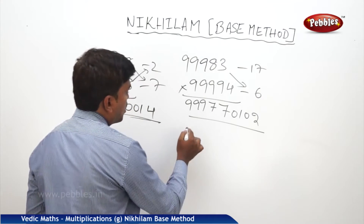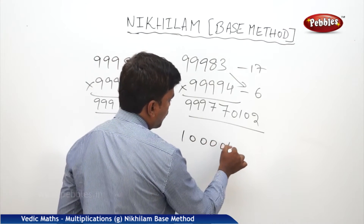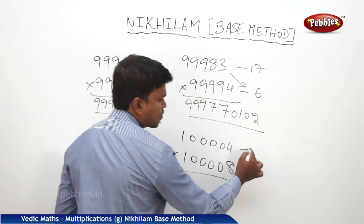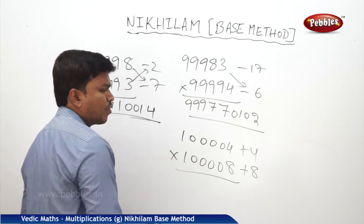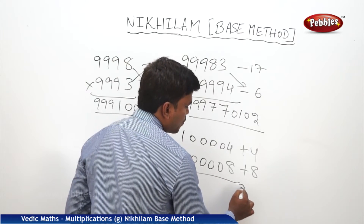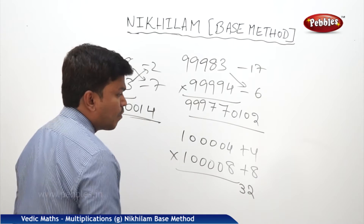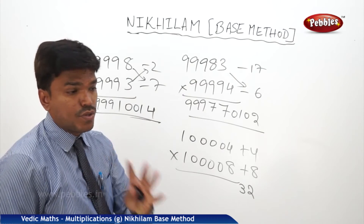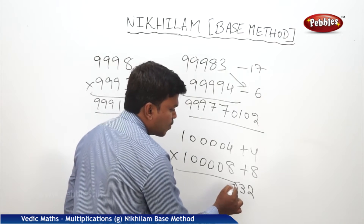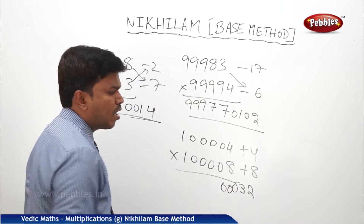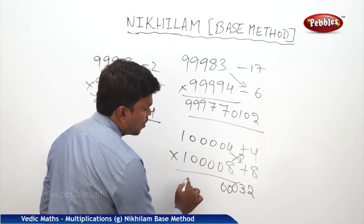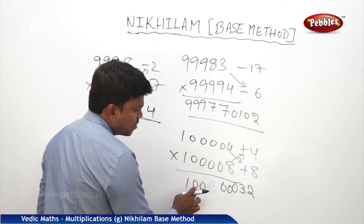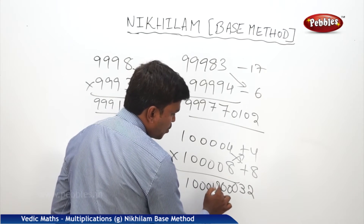Even numbers above the base: 10004 into 10008. It is plus 4 and plus 8. 4 eights are 32. But the base is 100000 — five zeros — so the right side part should have five digits; place three zeros before: 00032. Cross addition gives 10004 plus 8 = 10012. So the answer is 10012, 00032.